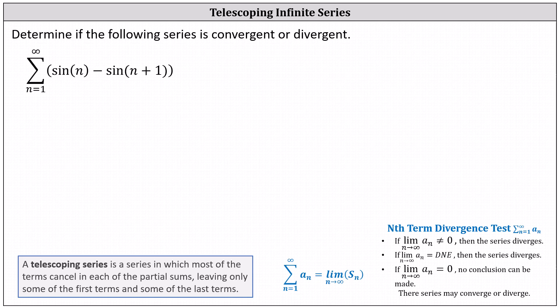Determine if the following series is convergent or divergent. We have the sum from n equals 1 to infinity of the difference of sine n and sine of the quantity n plus 1.